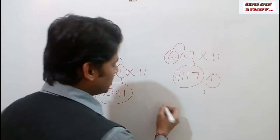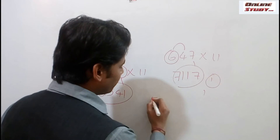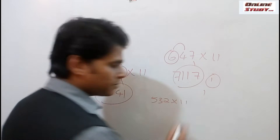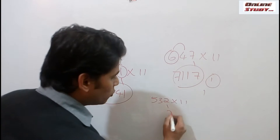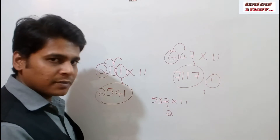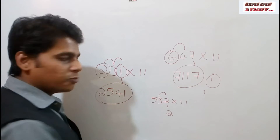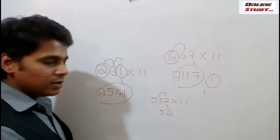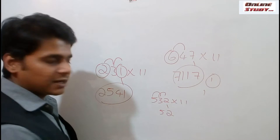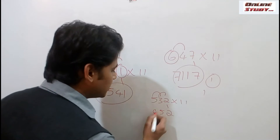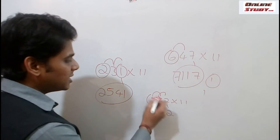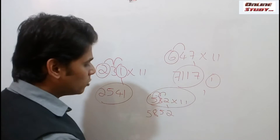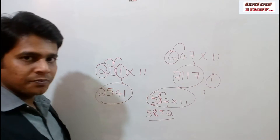We shall take another example: 532 into 11. Place 2 as it is. The next step is 2 plus 3, that is 5. The next step is 3 plus 5, that is 8. And the final step is place 5 as it is. So the multiplication of 532 into 11 is 5852.